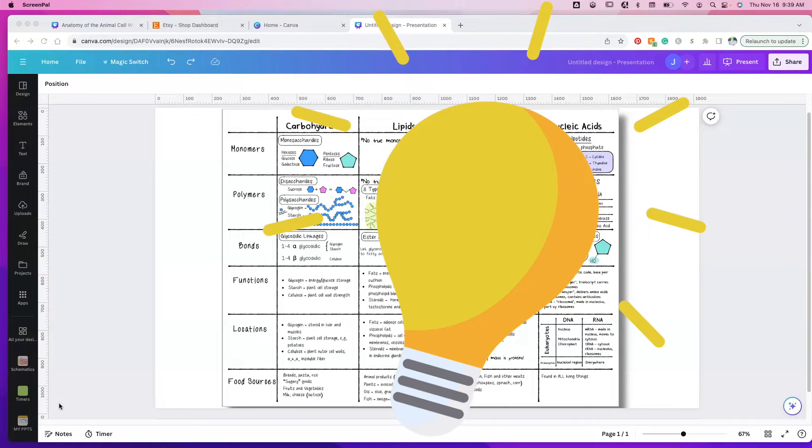This is a table that grids the four macromolecules and some of the important aspects of those macromolecules. You'll see on the left hand side we have monomers and polymers. We have bonds because there's different bond types. We have functions, locations, and we can throw in there some food sources.